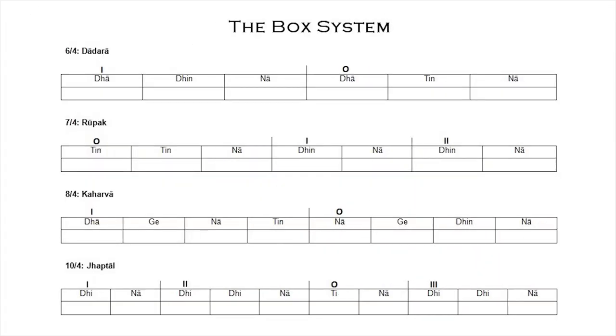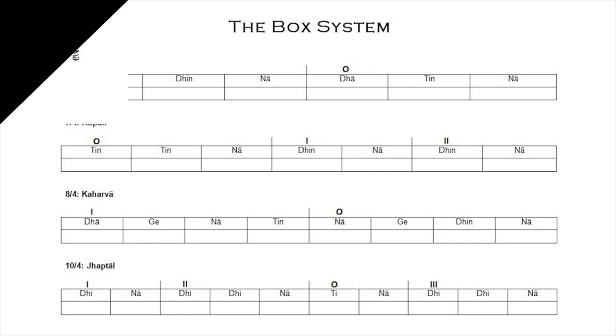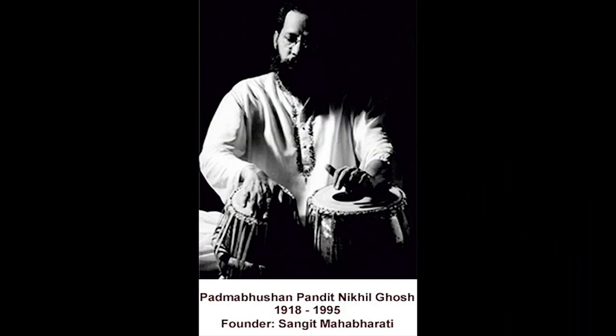First method: the box system. The system of notating orally transmitted drumming traditions is called the box system because the drumming syllables are notated or written in boxes. This system was first proposed by an Indian scholar, author and legendary tabla player, Pandit Nikhil Ghosh in 1982.